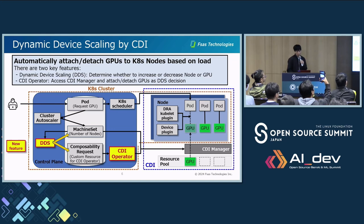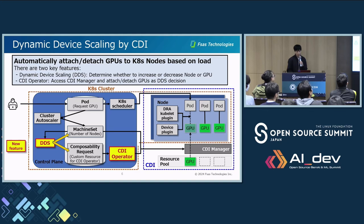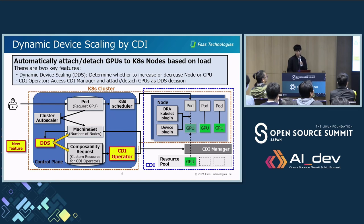We would like to realize automatically attaching or detaching GPUs to Kubernetes nodes based on load. There are two key features. One is Dynamic Device Steering, which we call DDS. This feature determines whether to increase or decrease nodes or GPUs depending on load, and is responsible for determining optimal resource allocation. The second one is the CDI operator. This feature accesses CDI manager to attach or detach GPUs as DDS decides, and is responsible for actually performing the GPU attach or detach.